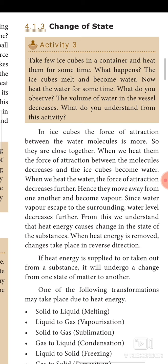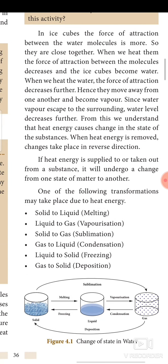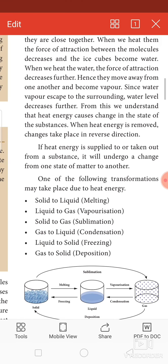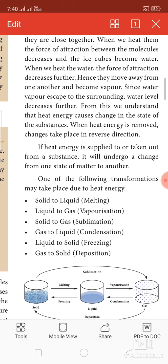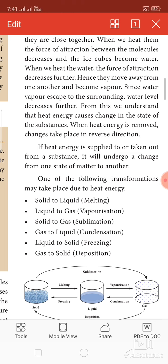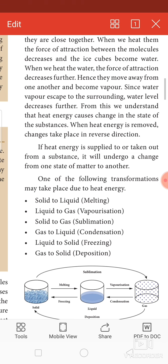If heat energy is removed, changes take place in the reverse direction. If heat energy is supplied to or taken away from a substance, it undergoes a change from one state of matter to another. The transformations due to heat energy are: solid to liquid is melting, liquid to gaseous state is vaporization, solid to gas is sublimation, gas to liquid is condensation, liquid to solid is freezing, and gas to solid is deposition. These are all given in your textbook.